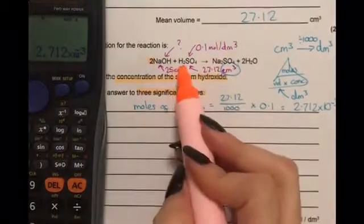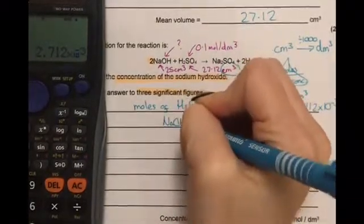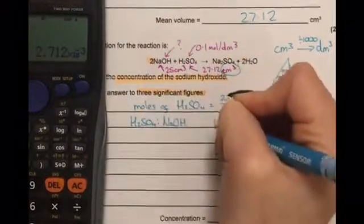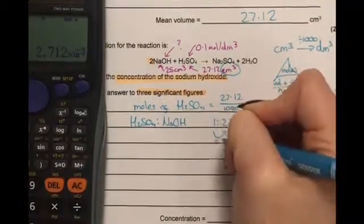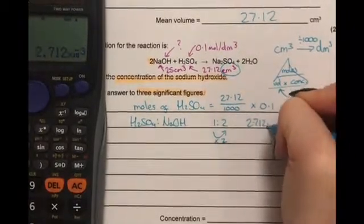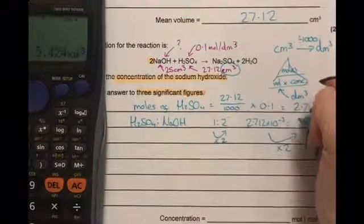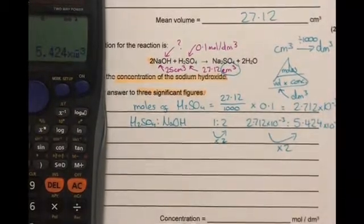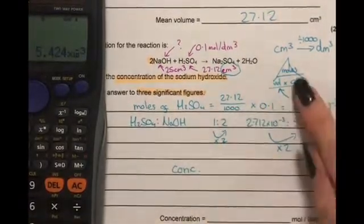Now if we look at our equation we'll see that for every mole of sulfuric acid we have two moles of sodium hydroxide or it is said to be a 1 to 2 mole ratio. Now to get from the number 1 to the number 2 we need to multiply by 2, 5.44 times 10 to the minus three.